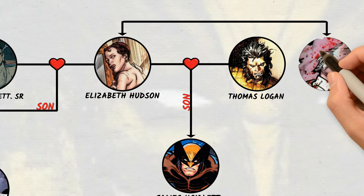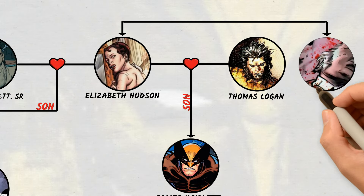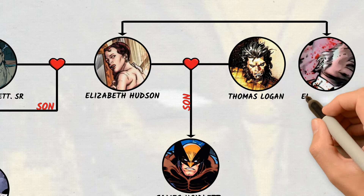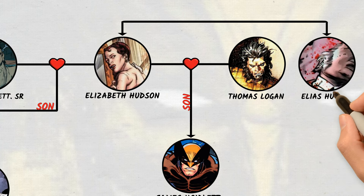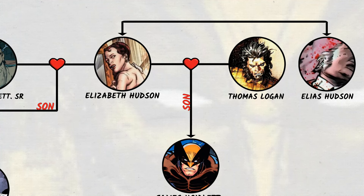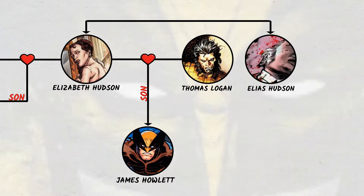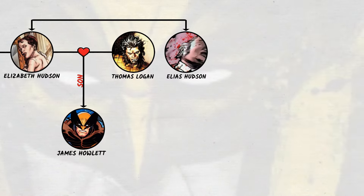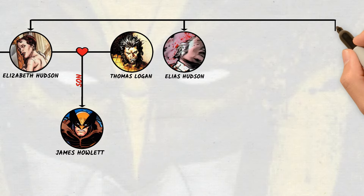Elizabeth had two brothers. Elias Hudson and his brother survived the shipwreck that killed their parents. He went on to own and run the Hudson Bay Company, which had previously hired James Howlett. Shortly after James departed, Elias committed suicide in his office.